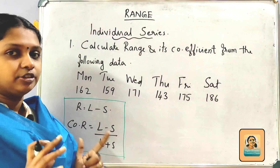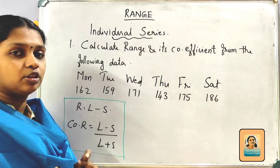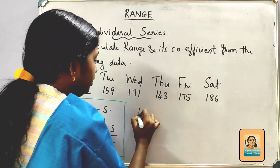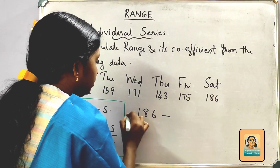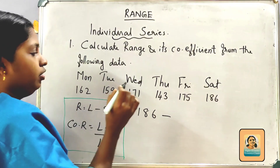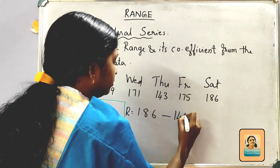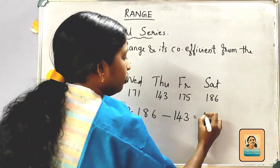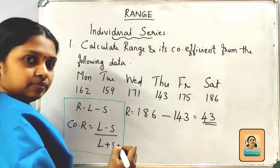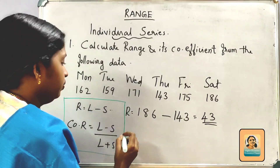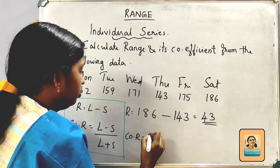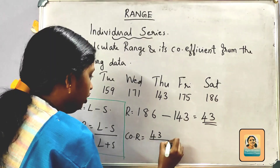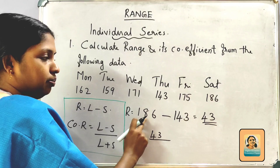L is the largest value, S is the smallest value. Now, the largest value is 186. So: 186 minus S, and the smallest value S is 143. So Range = 186 minus 143.